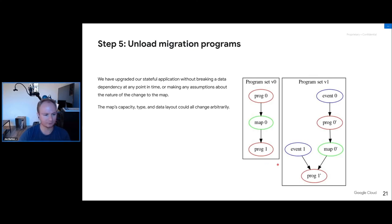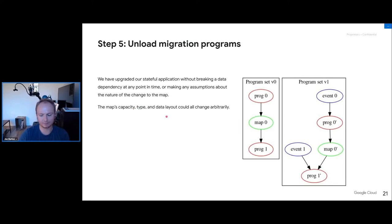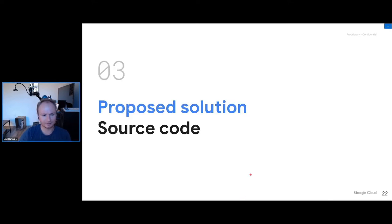This scheme makes no assumptions about the nature of the map change. We can change the map's capacity, its type (e.g., array to hash table), or the layout of the data inside — adding or removing struct members, even in the middle of the structure. You could potentially split one map into multiple or combine maps, though that's more advanced. That's the theory — now let's cover the kernel changes to implement it.